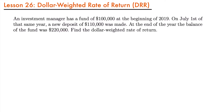Similar to the problems for the internal rate of return, when you want to find the dollar-weighted rate of return, your problem is going to explicitly tell you to solve for that rate. So it's going to be very obvious when you have a problem that is looking for a dollar-weighted rate of return. Notice that in this problem, we are looking at a time period of just one year — the year of 2019 — where at the beginning in January we have a balance of $100,000, then on July 1st a deposit of $110,000, and at the end of the year, December 31st, a balance of $220,000.